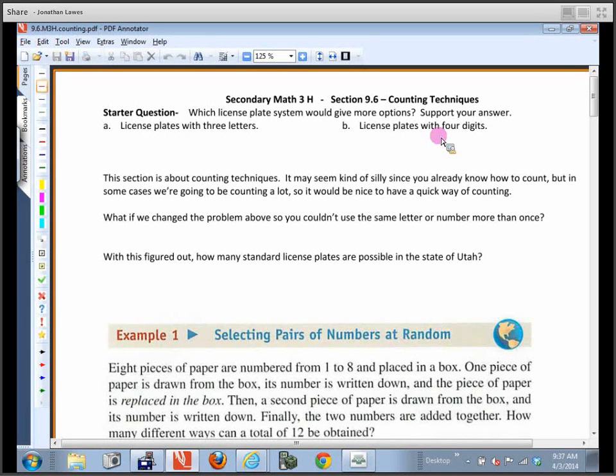Or license plates with four digits on them? So very simple license plates—we're either allowed to have license plates with three different letters on them, or a license plate with four digits on it.